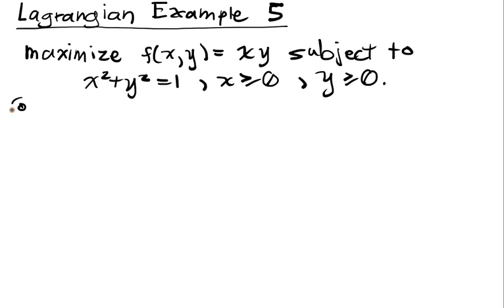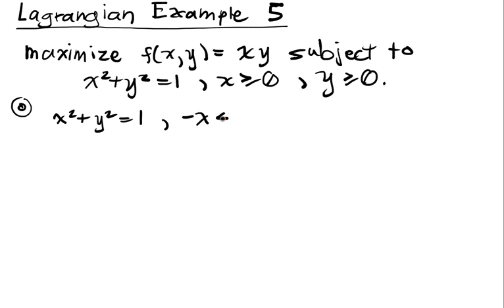Remember that the zeroth step is to make sure that the inequalities are going in the proper direction, so the constraints will be x² + y² = 1, -x ≤ 0, and -y ≤ 0.